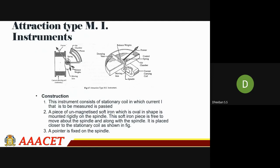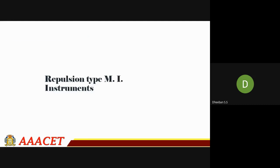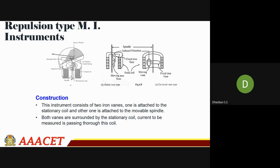In the repulsion type, the instrument consists of a stationary coil in which the current will be measured. There will be a soft iron piece — this is the moving iron — and you can see the current-carrying coil with the soft iron above it. The spindle is connected to the soft iron; in the case of spring control, there will be two springs around it. A piece of unmagnetized soft iron of oval shape is mounted on the spindle and is free to move. When the current-carrying coil is energized, a magnetic field is induced and the moving iron gets attracted.